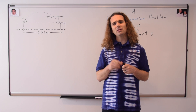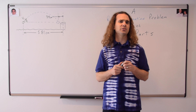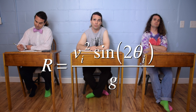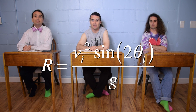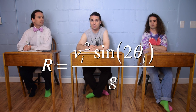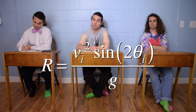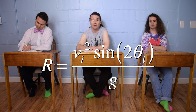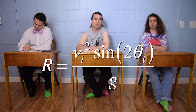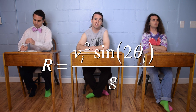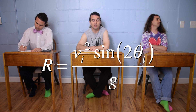Good. Bobby, what is the range equation? The range of a projectile equals the magnitude of the initial velocity — which is also the initial speed — squared, times the sine of two times the launch angle, all divided by the acceleration due to gravity.